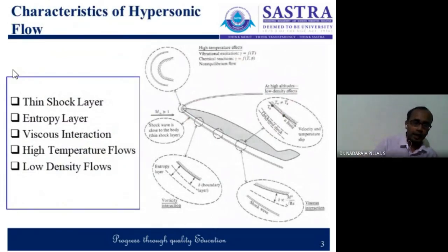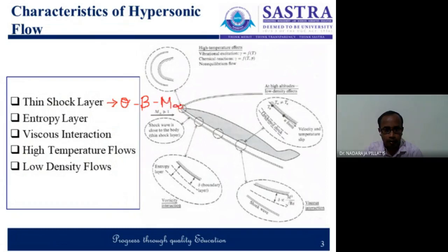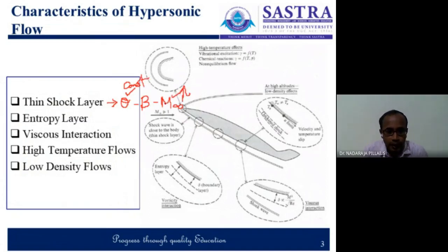We had a discussion on various characteristics of hypersonic flow, starting from thin shock layer, then entropy layer, then viscous interaction, then high temperature flows. In the case of thin shock layer, we had a discussion on the theta-beta-M relation. We understand that when theta is a deflection angle which is constant and M-infinity keeps on increasing, then beta also keeps on decreasing, and hence the shock layer — the layer between theta and beta — becomes thin.